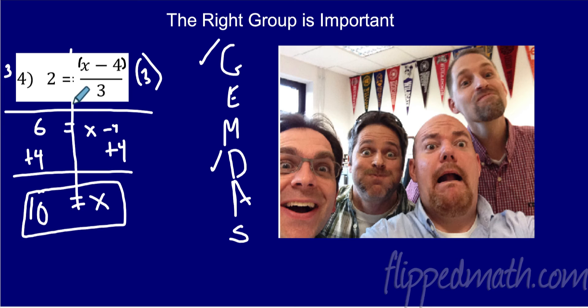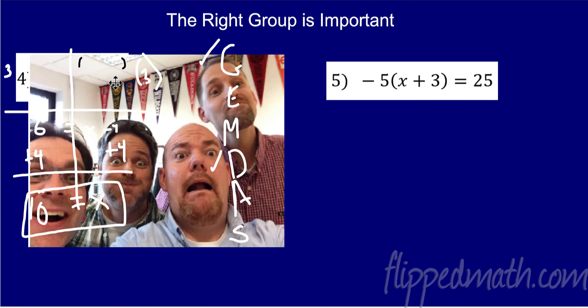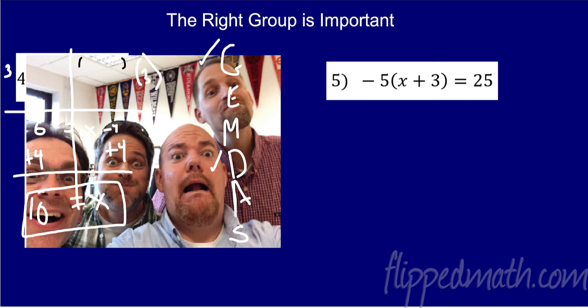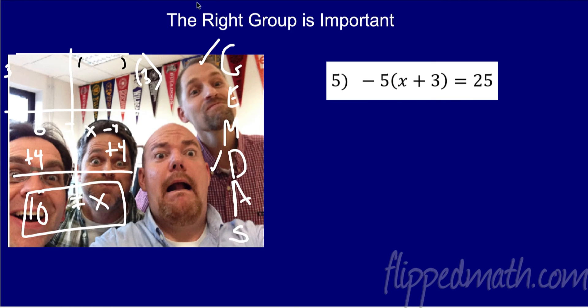And again, the tricky thing here was this is actually grouping. That's actually grouping. Let's try another one. So move these ugly mugs over here. So now this is pretty obvious. We have grouping here.